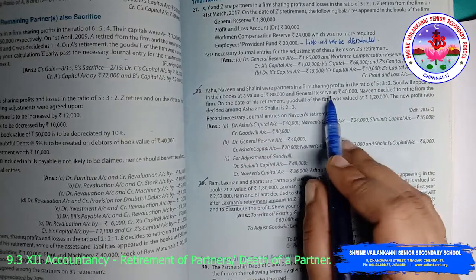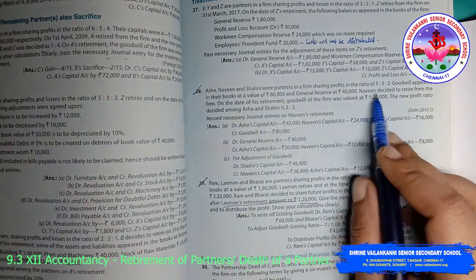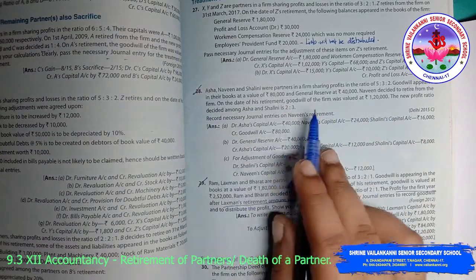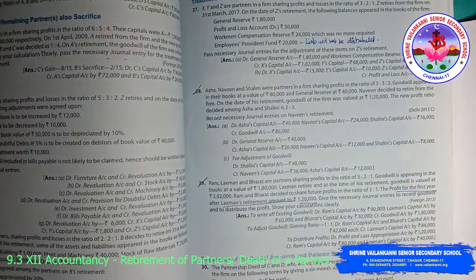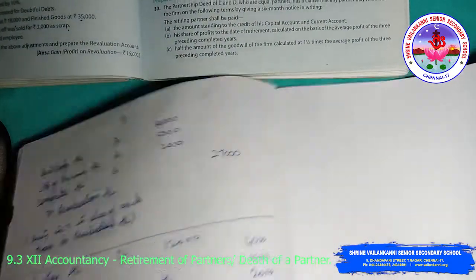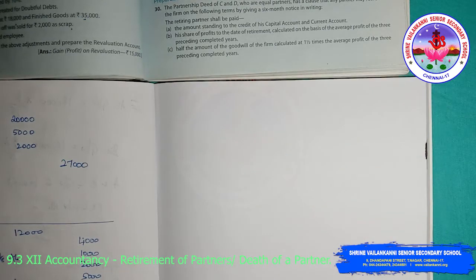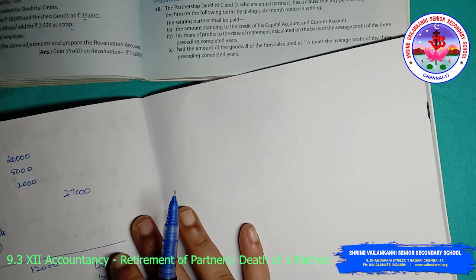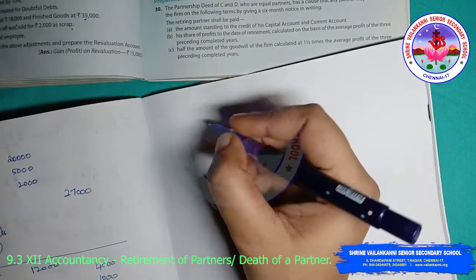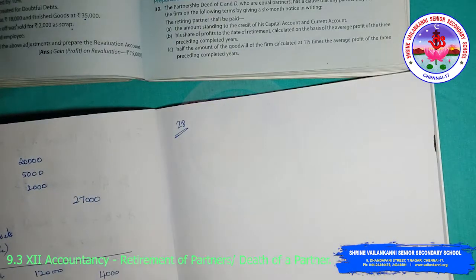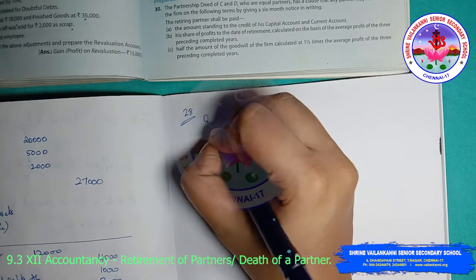Record necessary journal entries on Naveen's retirement. The profit sharing ratio is 5:3:2, goodwill is 80,000, general reserve is 40,000, Naveen is retiring, goodwill value at retirement is 1,20,000, and new ratio is given. First, let us calculate the gaining ratio for goodwill valuation.